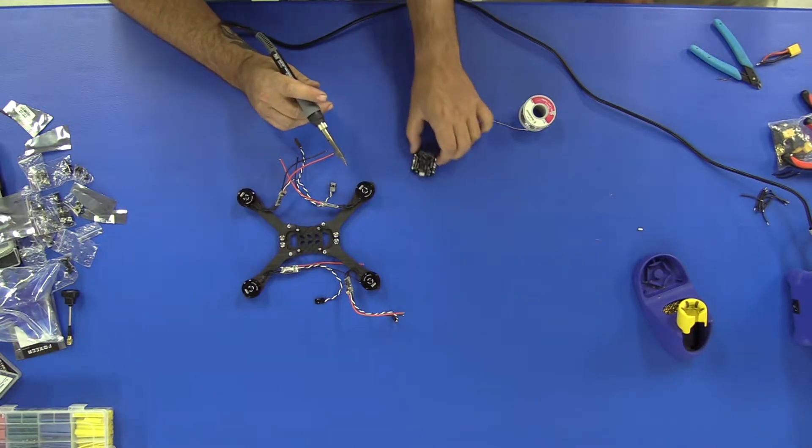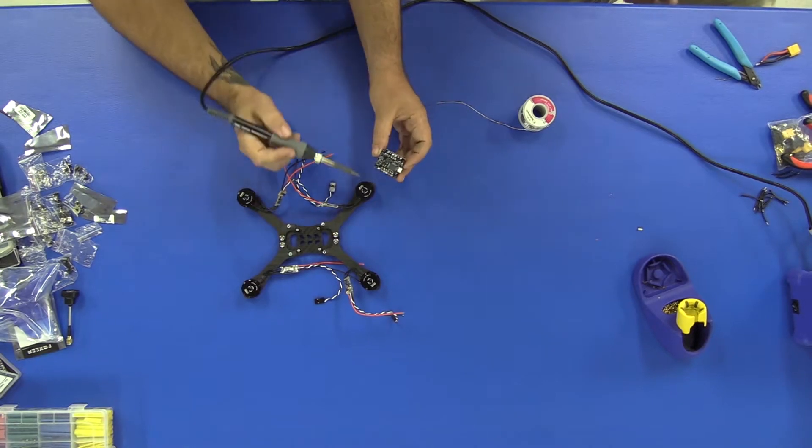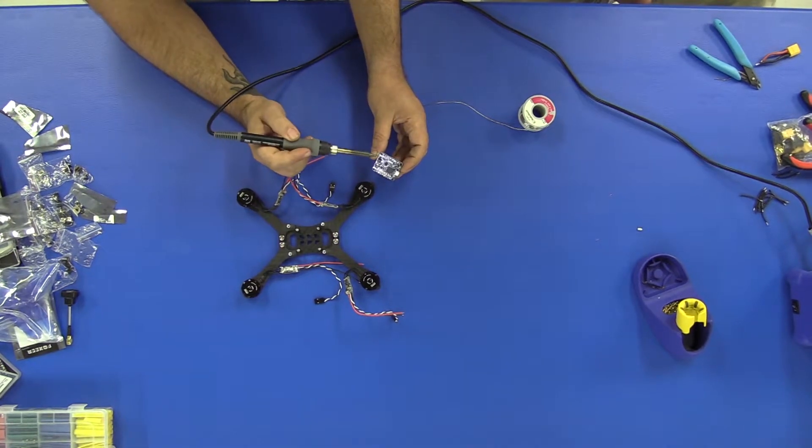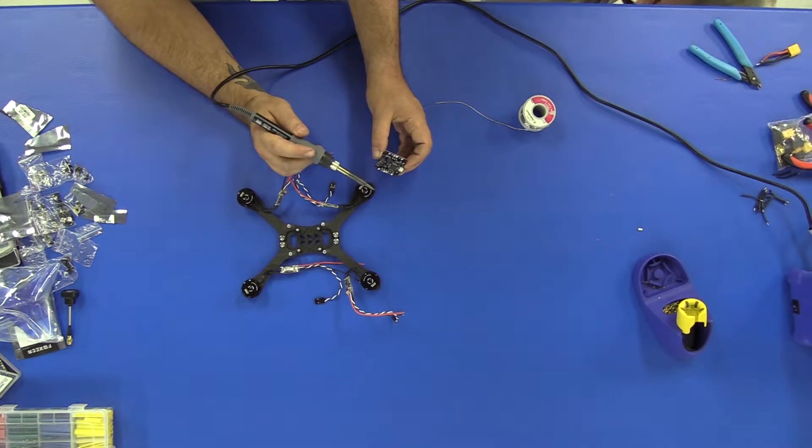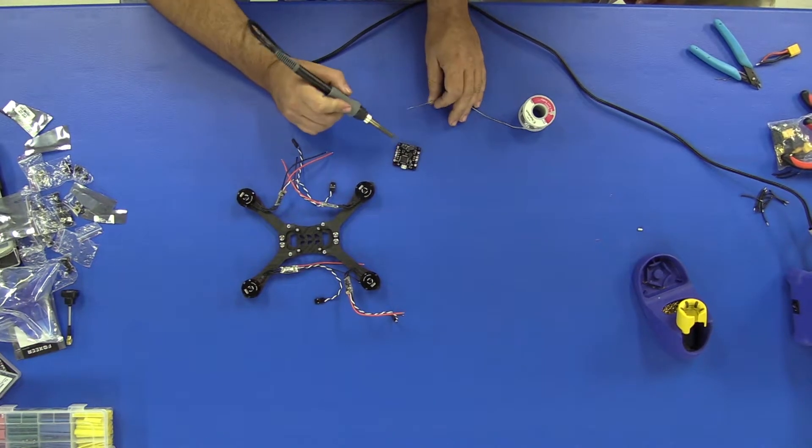Okay guys, you can see right there how it should look with your motor wires and signal wires for your ESCs. These are all tinned. Next step, we want to go ahead and tin for our VTX, receiver, and camera.